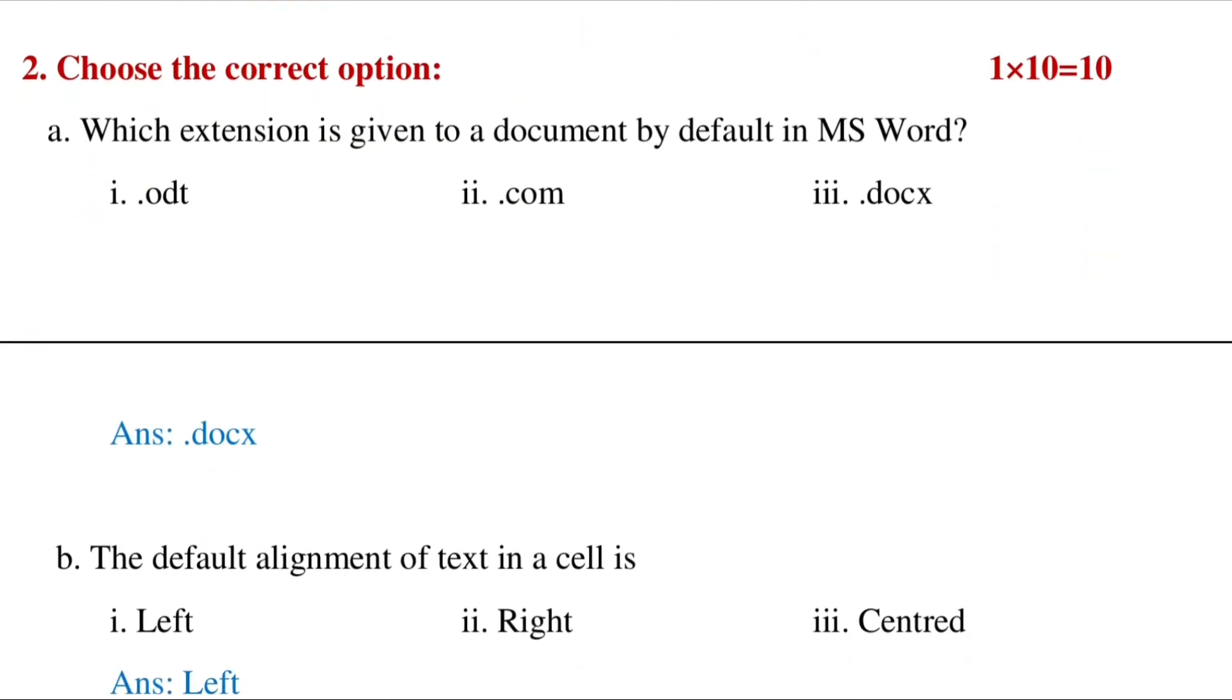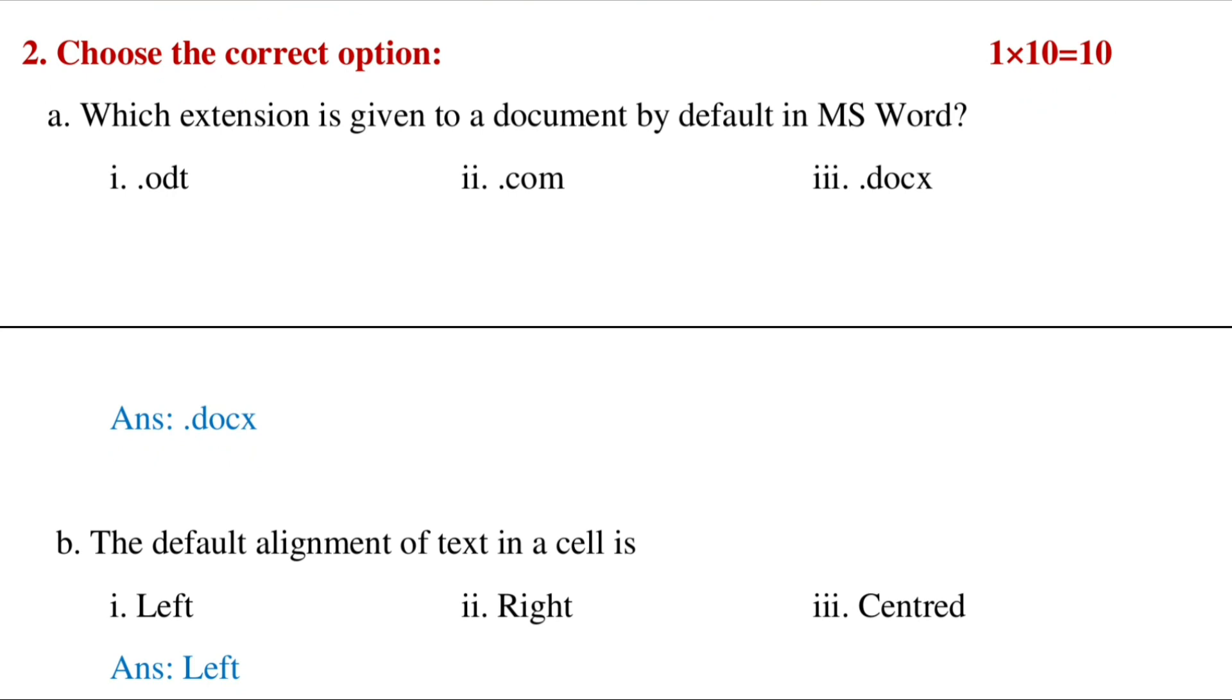Then MCQ. Which extension is given to a document by default in MS Word? This is .docx, and if you have installed MS Office 2003, then it will be .doc. The default alignment of text data in a cell is left.